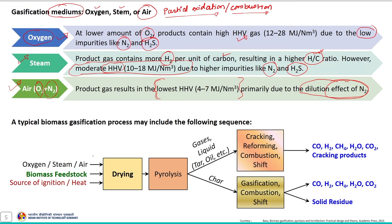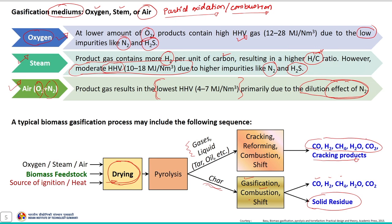A typical biomass gasification process involves the following steps. The feedstock enters the gasifier and first passes through the drying zone, followed by the pyrolysis zone — also called the thermal decomposition zone — where it is converted into gaseous product, liquid, and char. The gaseous and liquid product in the form of tar and oil further undergo cracking, reforming, combustion, and shift reactions. Parallelly, the char also undergoes gasification, combustion, and shift reactions to produce gaseous product and solid residue as a byproduct.